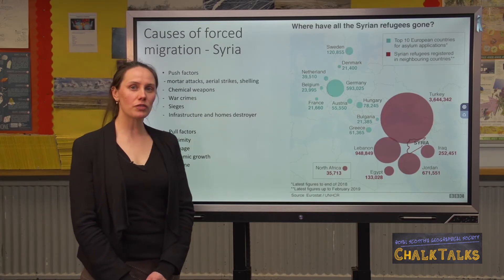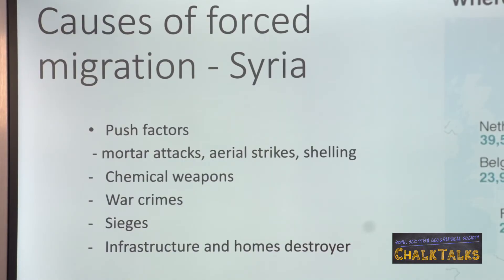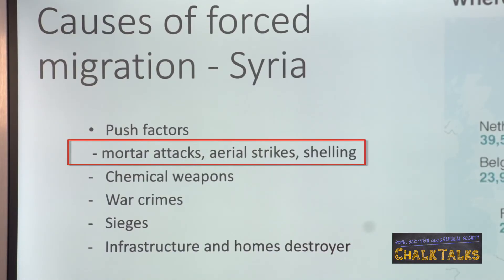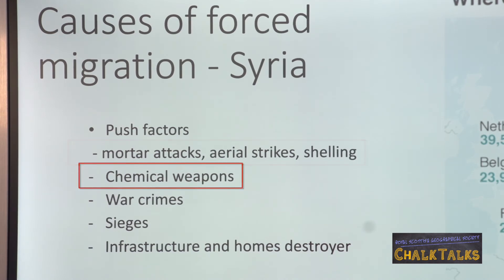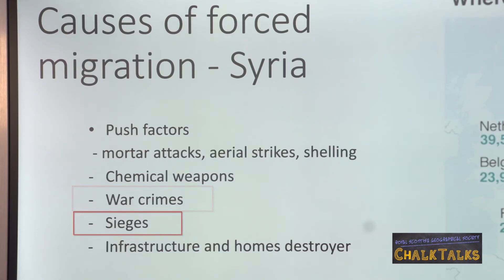To gain high marks, you should be able to explain what the risks to people's lives were. In Syria, thousands of people have been killed in mortar attacks, aerial strikes and shelling. Chemical weapons have been used against towns, such as chlorine bombs and sulphur mustard. All parties in the conflict have been accused of war crimes by the UN, and of causing civilian suffering such as blocking access to food, water and health services through sieges.